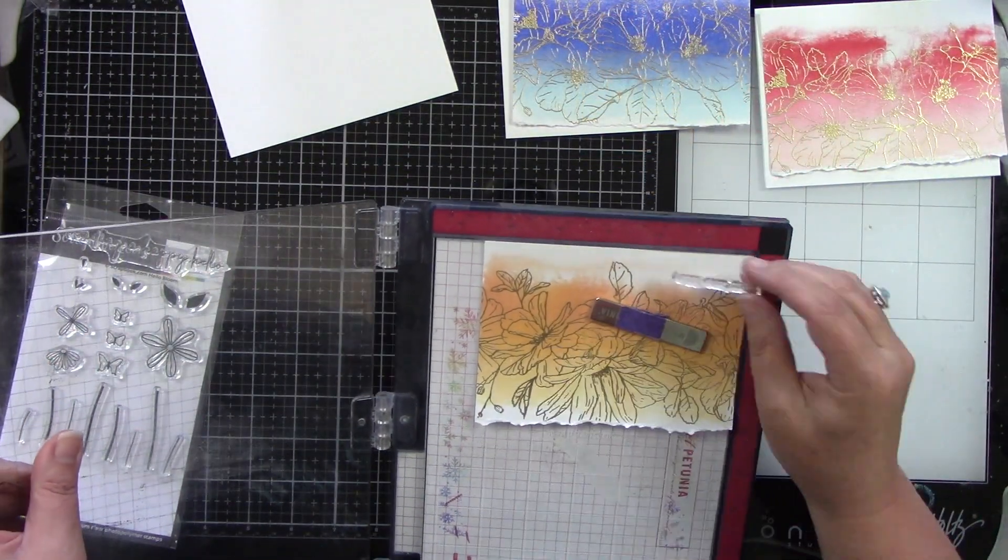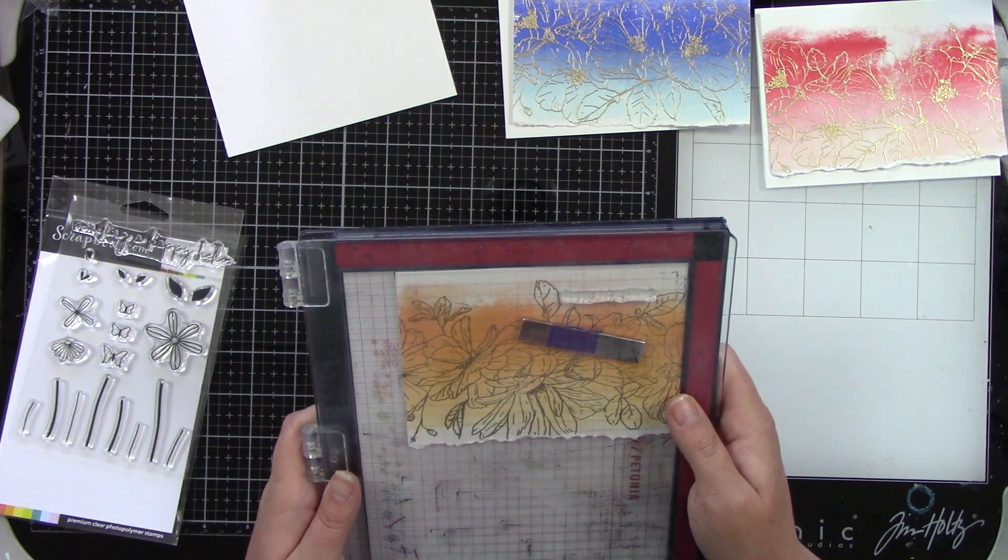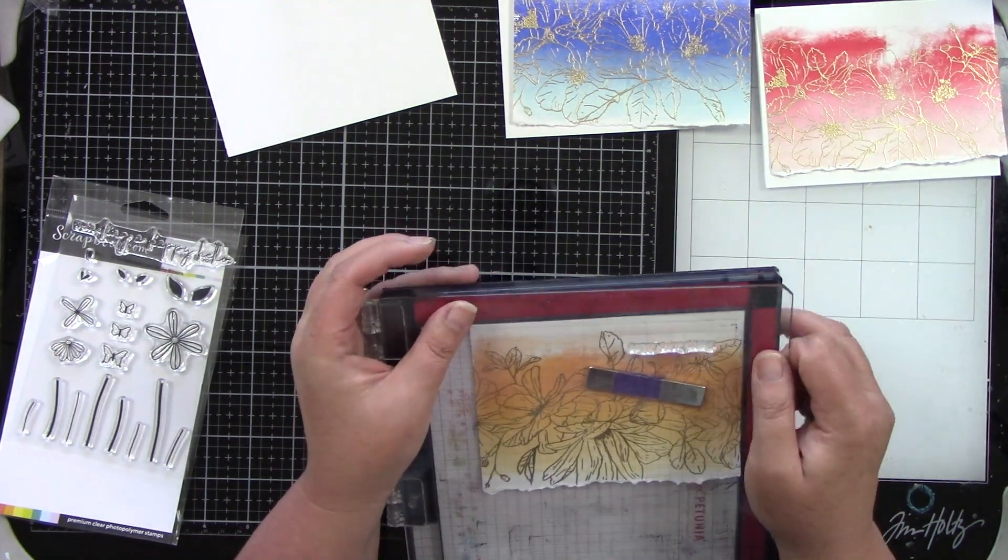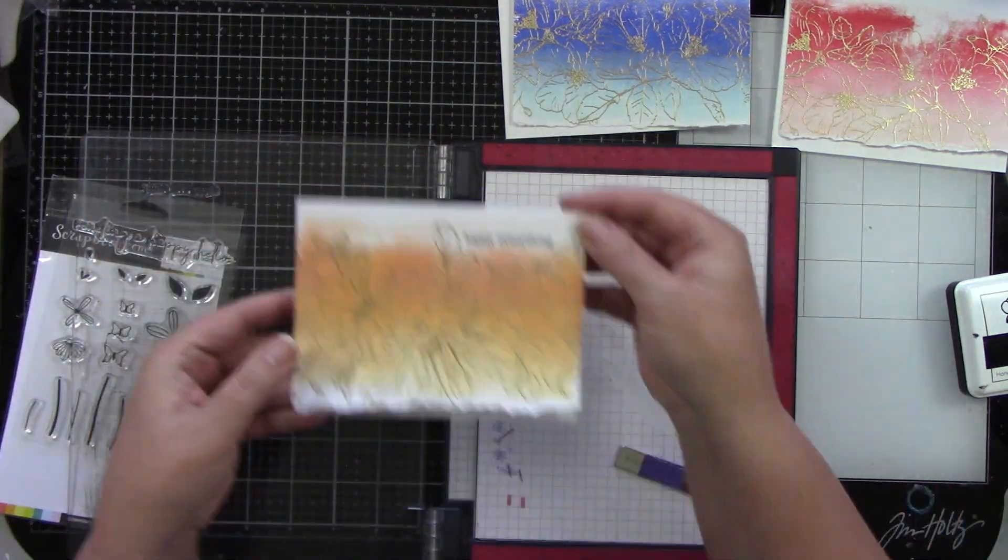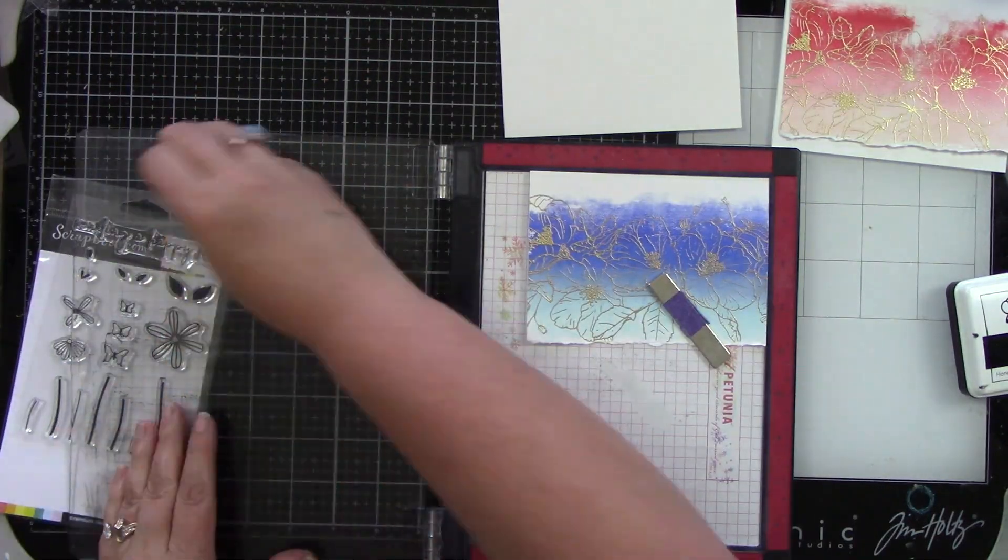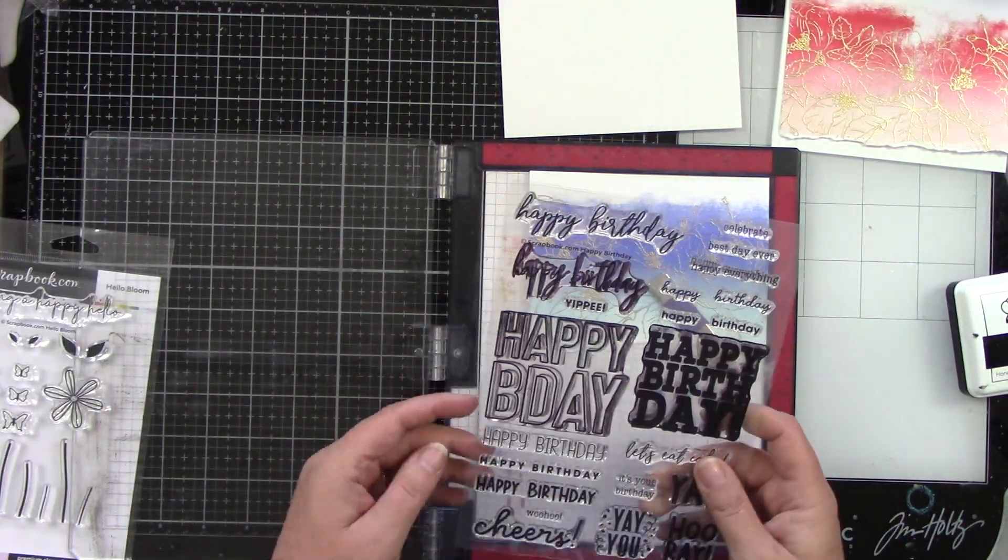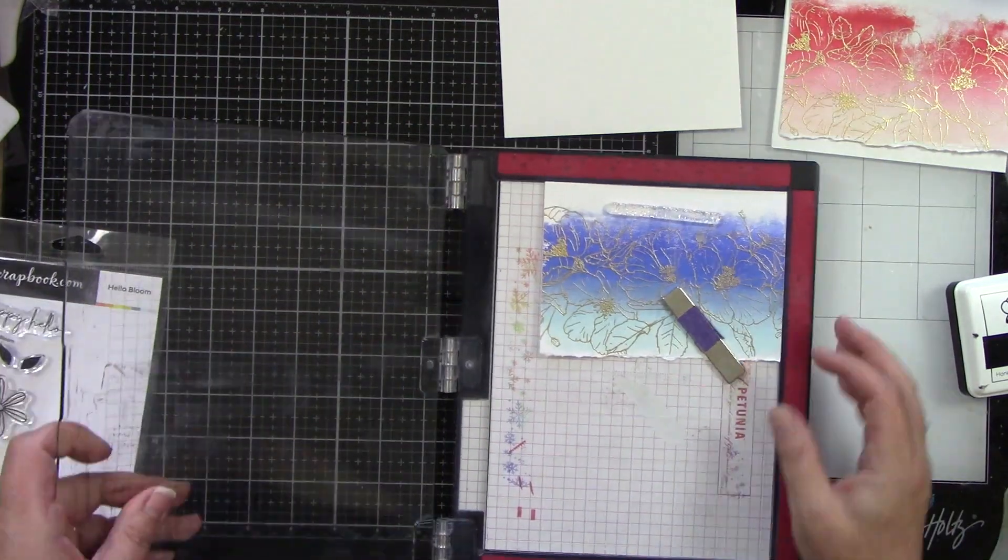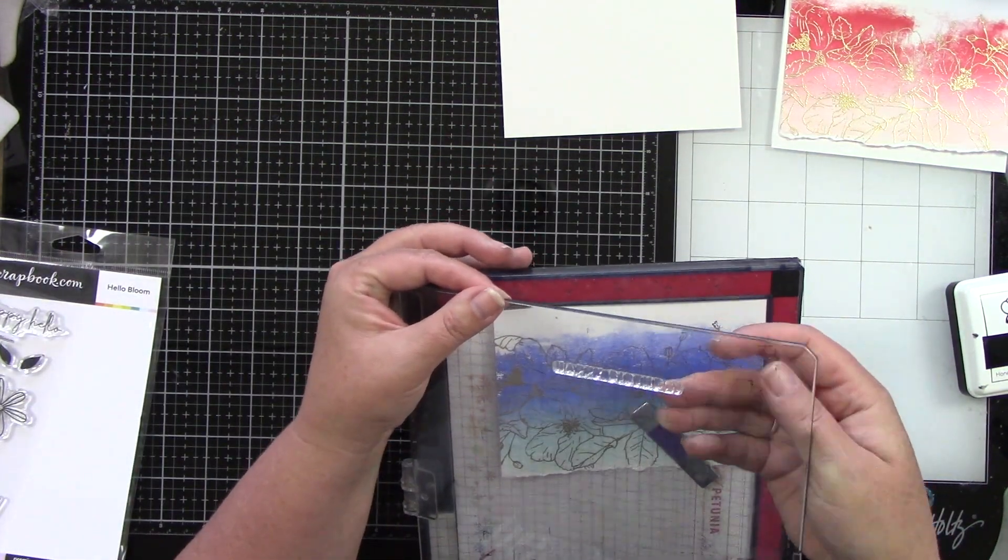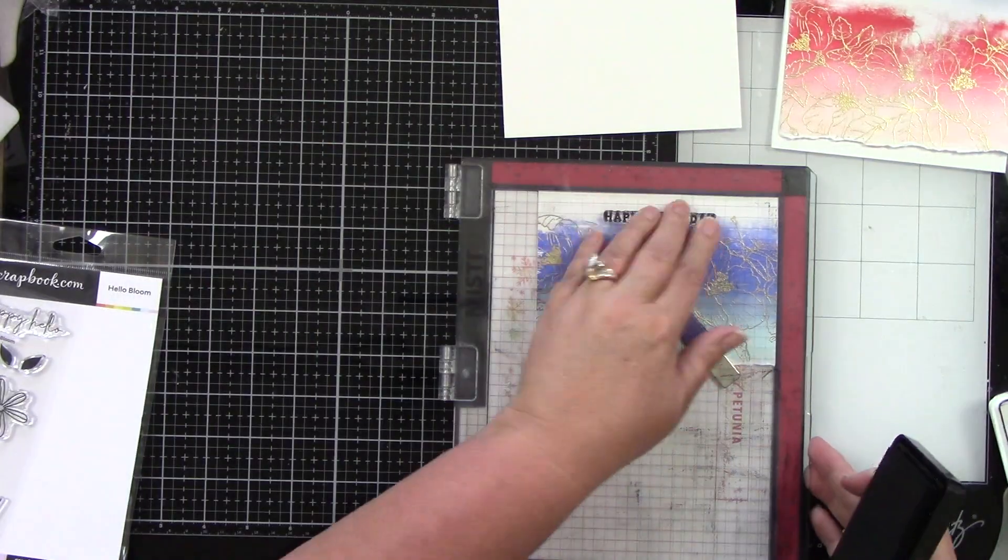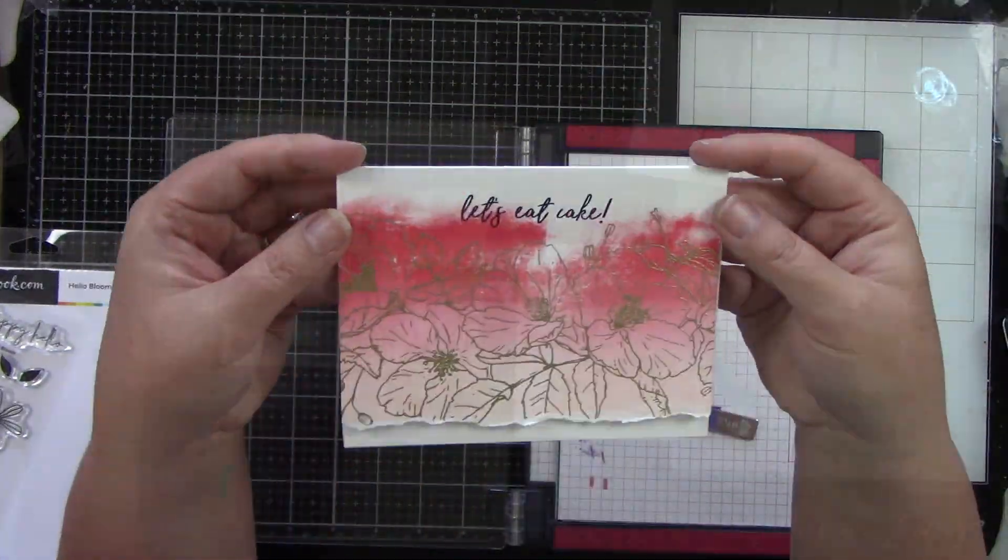Now I want to stamp my sentiment. This sentiment is from scrapbook.com's Hello Bloom. Nope, this one is from the Happy Birthday stamp. And I'm going to ink that up with Honey Bee Stamps Intense Black Ink. And that says happy everything. Then we have this blue one in here. This is also going to be from the Happy Birthday stamp set from scrapbook.com. You get a lot of great sentiments in here. Just trying to decide which happy birthday. Because even though this is floral, you could give this to a guy because of the blue. So I wanted the writing to not be so scripty and a little more bold. So I'm centering that on the top. And that one says happy birthday. And then this one says let's eat cake. So that one is also from the Happy Birthday stamp.